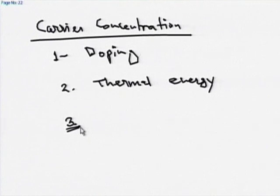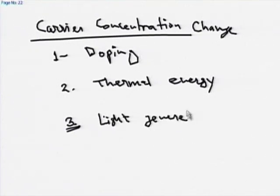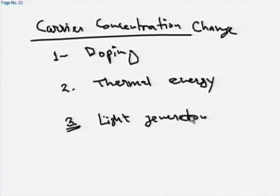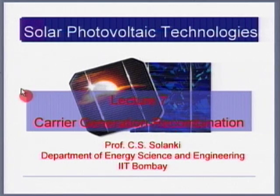The third important factor which can result in carrier concentration change is light — generation due to light. The reverse reaction also takes place and recombination can also occur. This is what we are going to discuss in this lecture: carrier generation and recombination.